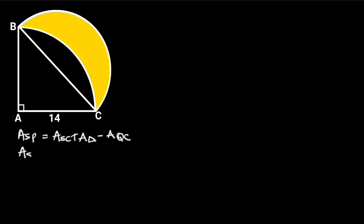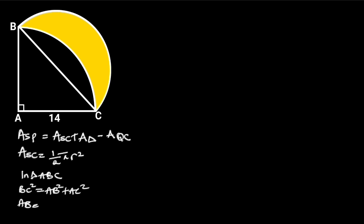The area of the semicircle is equal to 1/2 pi r squared. To find the radius of the semicircle, let's focus on triangle ABC. Triangle ABC is a right triangle, so from the Pythagorean theorem, BC squared is equal to AB squared plus AC squared. AB is equal to AC, which is equal to 14.